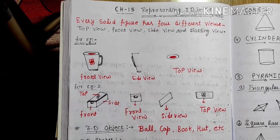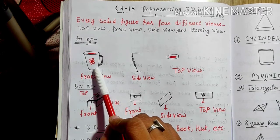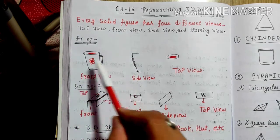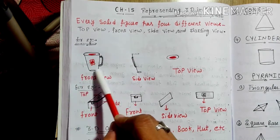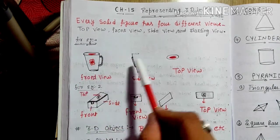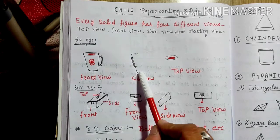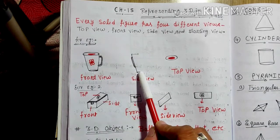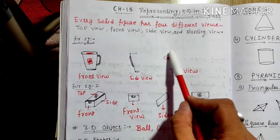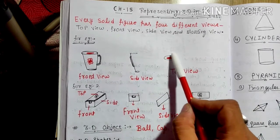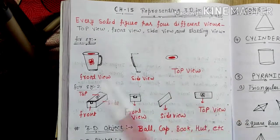As you can see I have drawn a glass mug. This is the front view of the glass mug. If I look from the side of this glass, then it will look like this. And if I look at the glass from the top, then the top view will look like this.